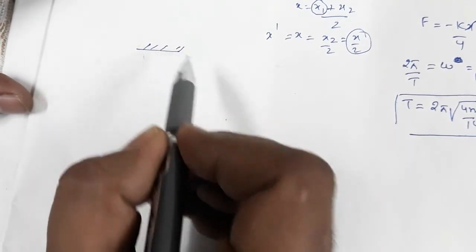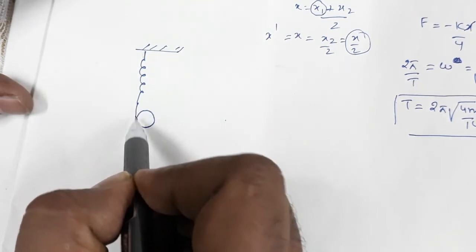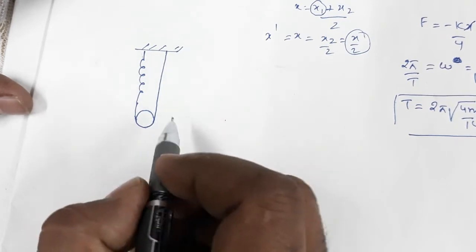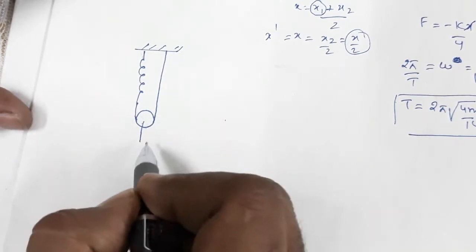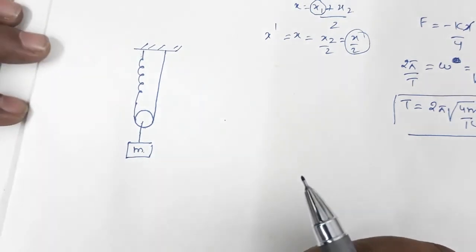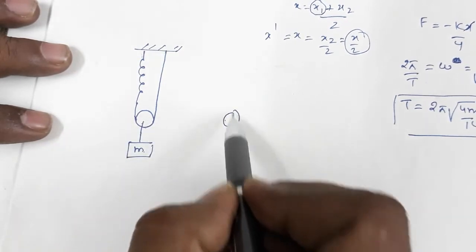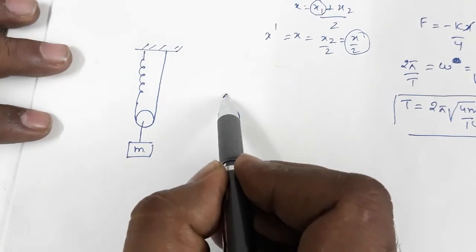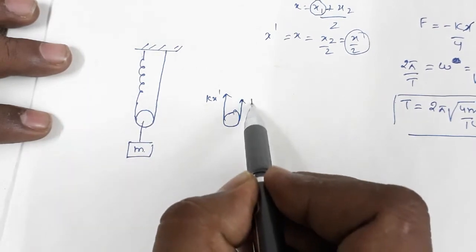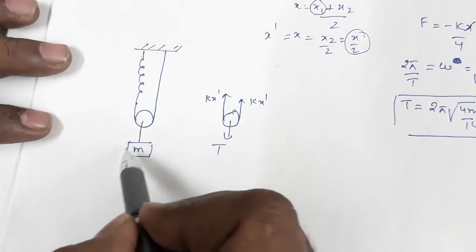Now let us see one more example. This is a fixed rigid support with a spring. One end of the string passes over the pulley, and this part is fixed. This is a massless ideal pulley. A string is connected to a block of mass m. Let x' be the extension on the spring side — so the spring force is kx' on both sides of the pulley, and the tension T acts on the block.